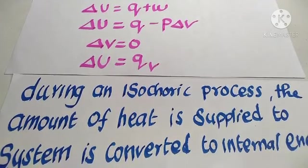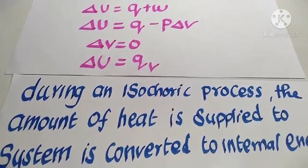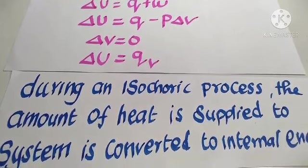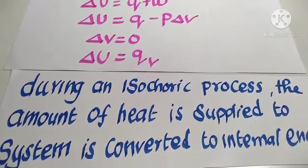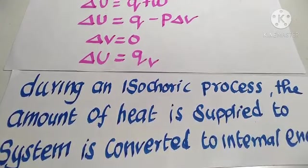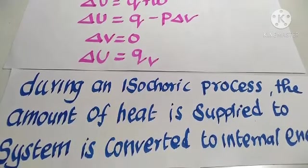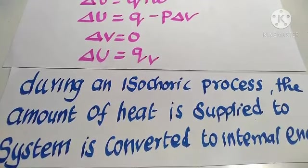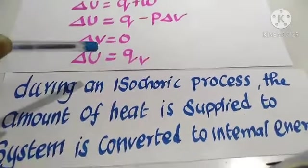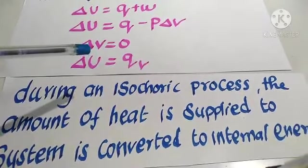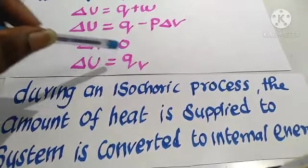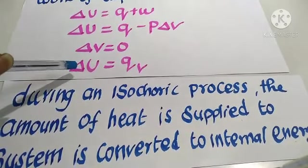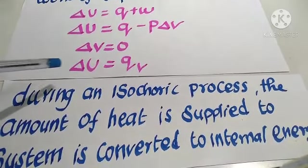During the isochoric process, volume remains constant. Any amount of heat supplied to the system is converted entirely into internal energy. The amount of heat supplied Q is converted into internal energy delta U.